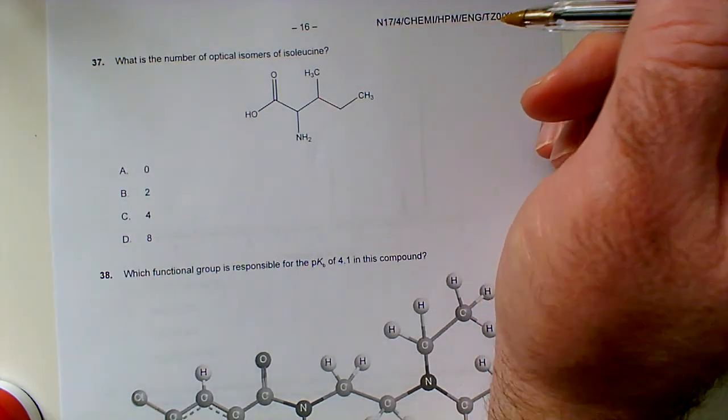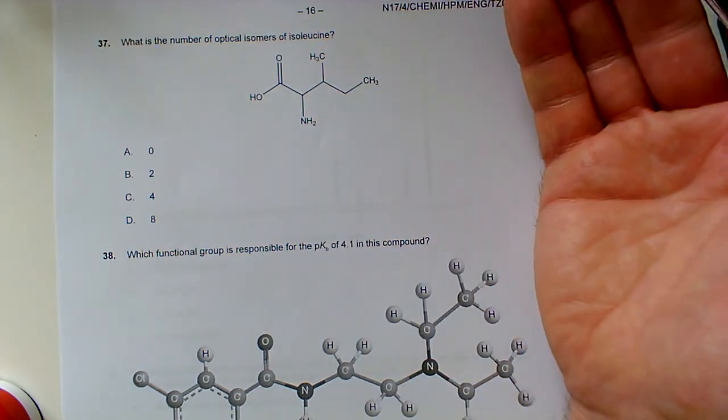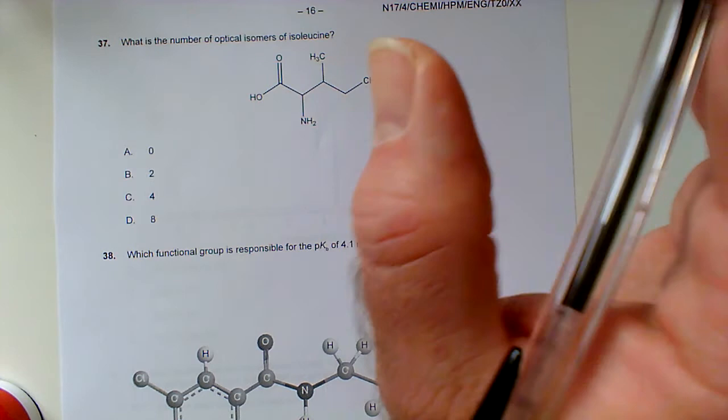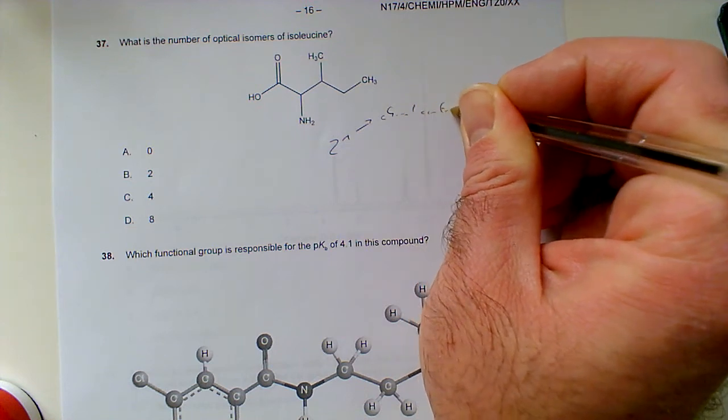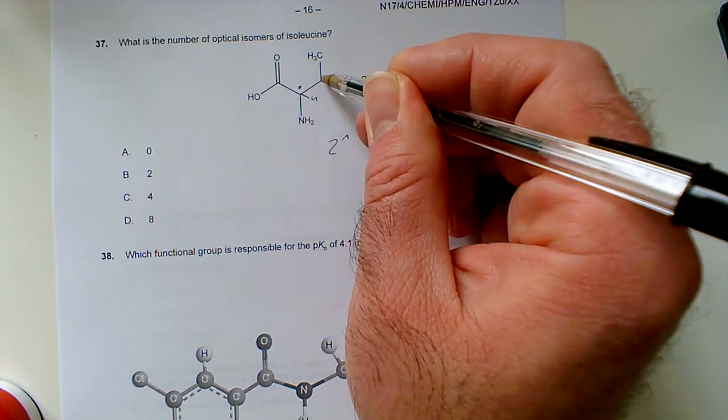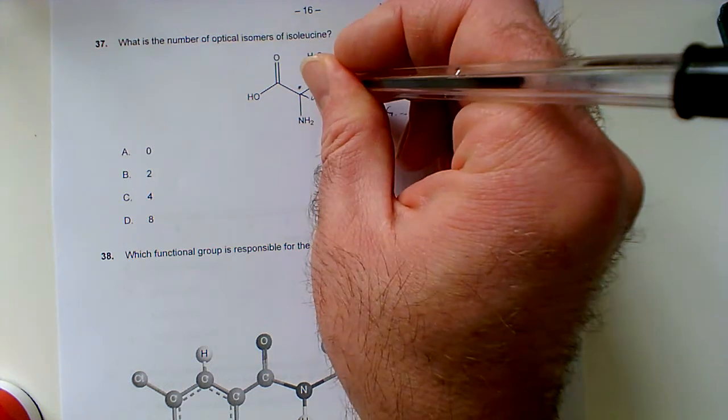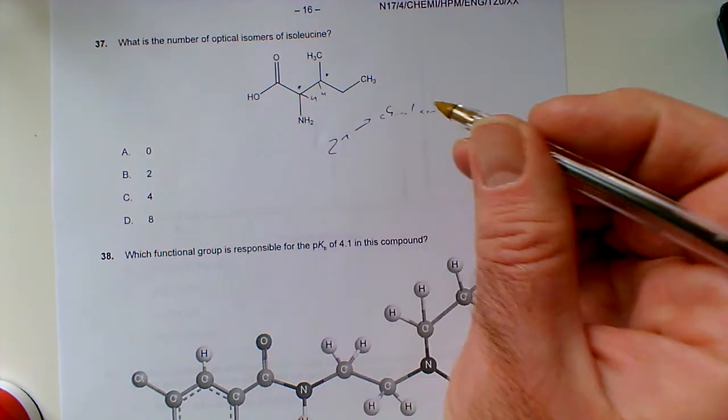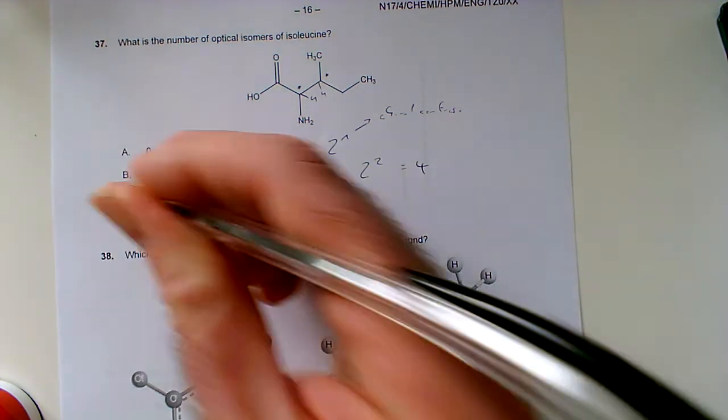Question 37: What is the number of optical isomers of isoleucine? There's a quick shortcut: 2 to the power N, where N is your number of chiral centers. We've got a chiral center here—mark that with an asterisk—because there's four different groups attached. We've also got a chiral center on this carbon with a methyl group, ethyl group, and this other group. That's two chiral centers, so 2 to the power 2 is 4. Four possible enantiomers.